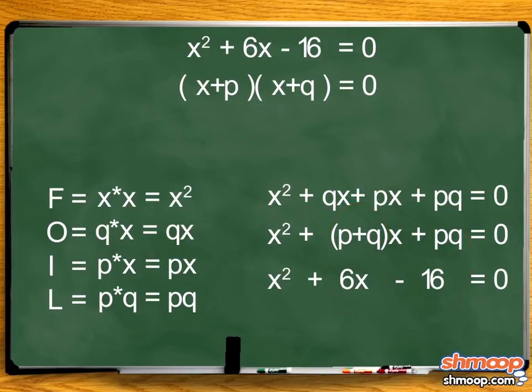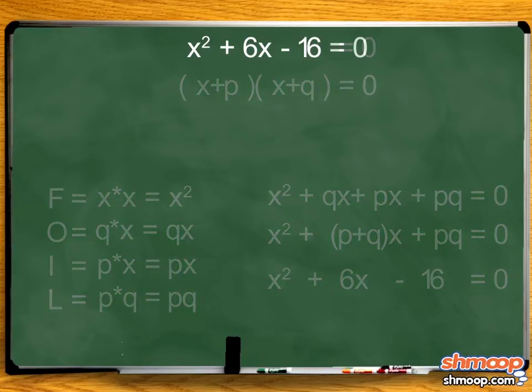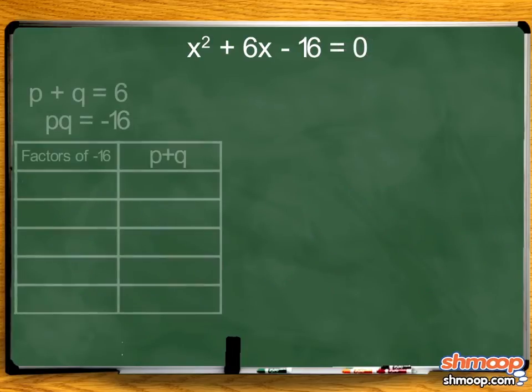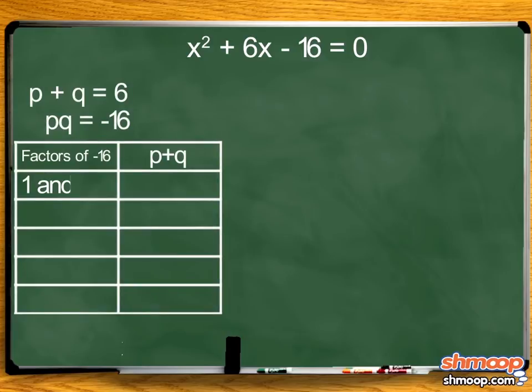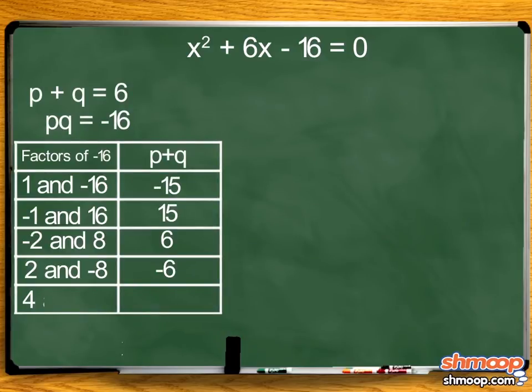So first, let's find two numbers that multiply together to give negative 16. Here's a chart of all the factors of negative 16: 1 and -16, -1 and 16, 2 and -8, -2 and 8, 4 and -4.